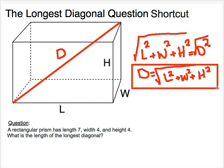Okay, so that's our formula. Pretty simple, right? Now here's a question. A rectangular prism has length 7, width 4, and height 4. What is the length of the longest diagonal?